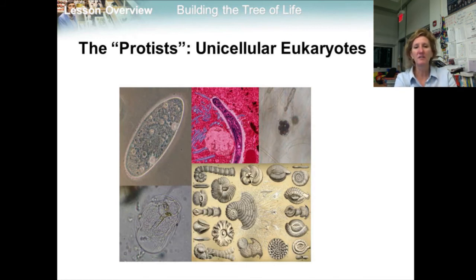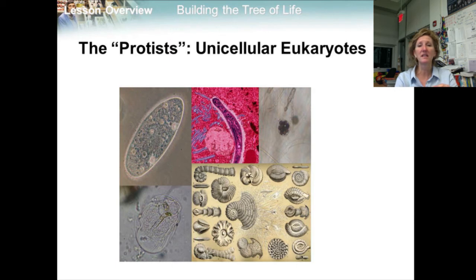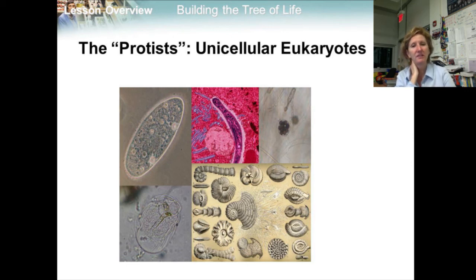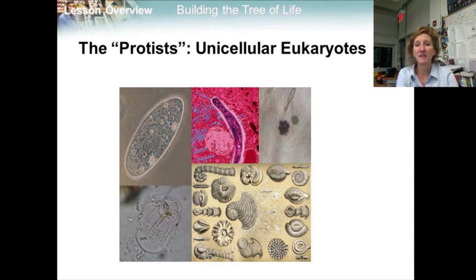The kingdom Protista has long been viewed by biologists as a catch-all group of eukaryotes that could not be classified as fungi, plants, or animals. Recent molecular studies and cladistic analysis have shown that the eukaryotes formerly known as Protista do not form a single clade. Current cladistic analysis divides these organisms into at least five clades. Most protists are unicellular, but one group — the brown algae — is multicellular. Some protists are photosynthetic while others are heterotrophic, and some display characteristics resembling those of fungi, plants, or even animals.